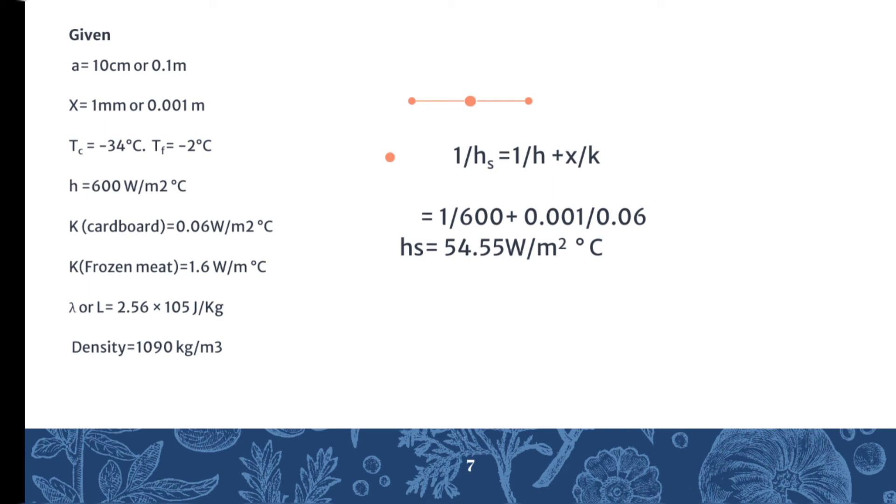Putting all values into it, we can find the actual heat transfer coefficient: 1/hs = 1/600 + 0.001/0.06, giving hs = 54.55 W/m²°C. Now we are going to put everything into Plank's equation.